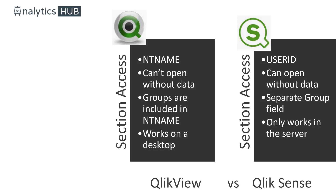Another difference is that in QlikView, groups are included in NT Name — so NT Name can contain domain slash username or domain slash group name. In Qlik Sense, if you're using an Active Directory group, you need to create a separate column called Group and include the group name in that column.